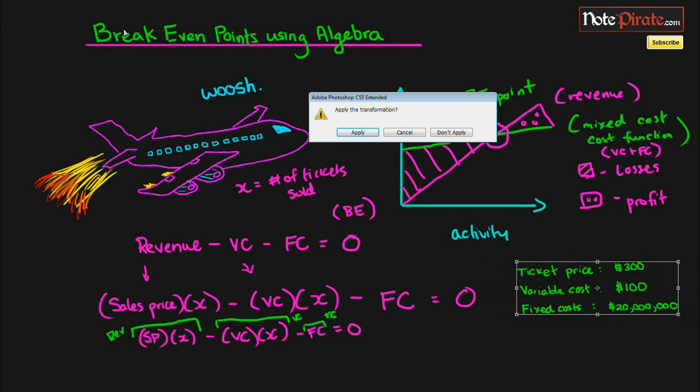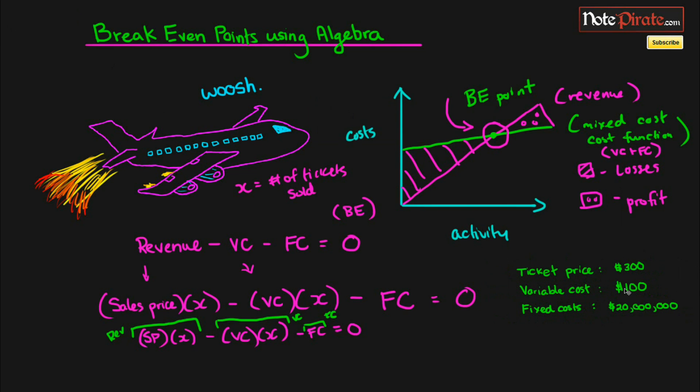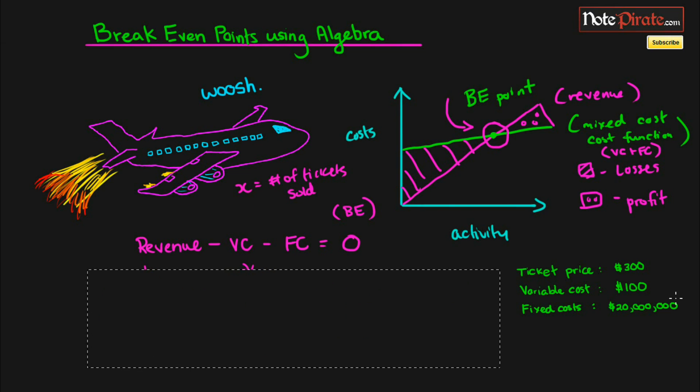Since I forgot that I would be writing over there, I'm actually just going to shrink this down a bit. Our ticket prices are going to be $300, our variable cost per flight is going to be $100, and our fixed costs for this jet that we're flying and all the overhead costs are going to be $20 million. So I'm going to get rid of this so that I can actually write somewhere.